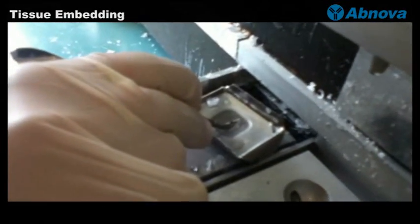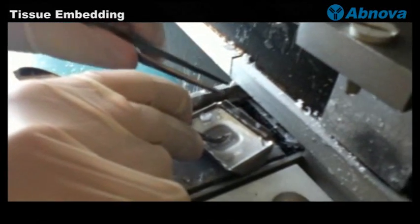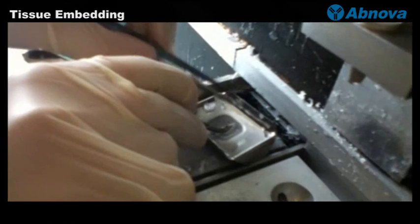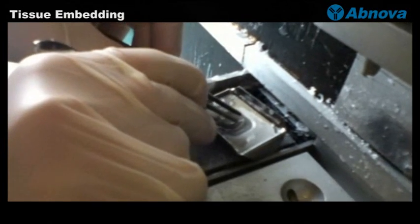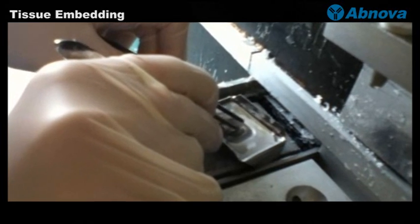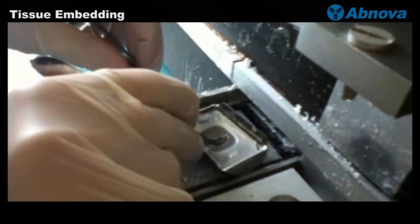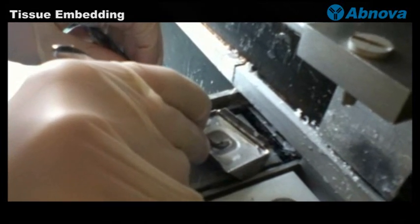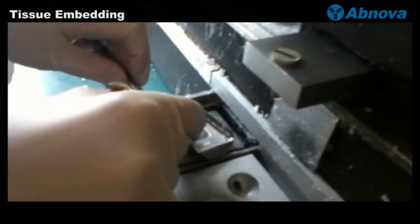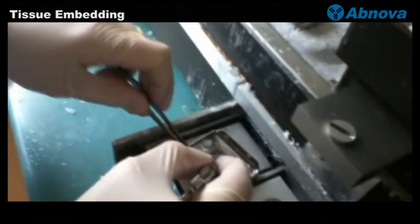You have to press the tissue against the filter cutting side of the block so that it will be close and oriented well to that side. With the other forceps you can loosen the forceps, and you can do everything on the cold surface.